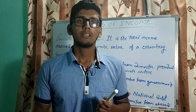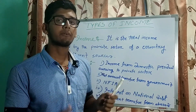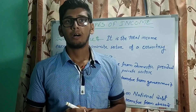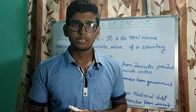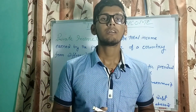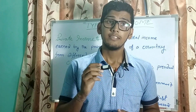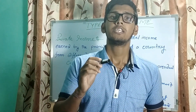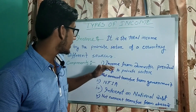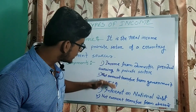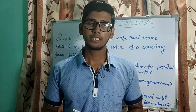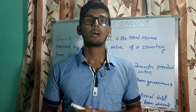The fifth and last component is net current transfer from abroad. Similar to transfers from the home country's government sector, various transfer payments also occur from different foreign countries, and these incomes are calculated in private income. If we add all these components, we will get the total private income. Now let us understand what personal income is.